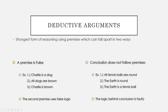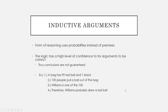The other way a deductive argument can fall apart is if the conclusion does not follow the premises at all. For example: 'all tennis balls are round' and 'the earth is round' leads to the conclusion 'the earth is a tennis ball.' The logic behind our conclusion is faulty — just because tennis balls are round and the earth is round does not mean that the earth is a tennis ball.